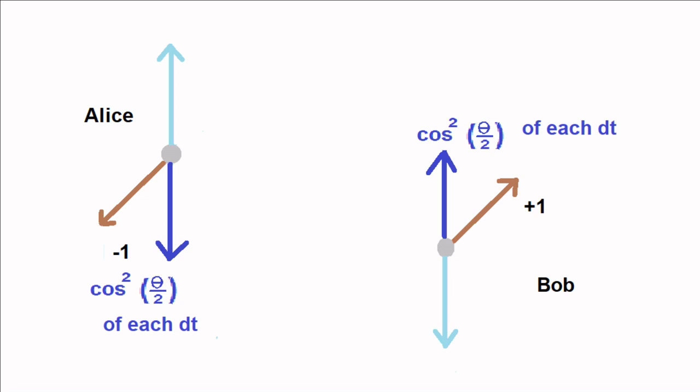With respect to any direction m, Alice's particle's spin along direction m will be the opposite of Bob's spin along direction m.